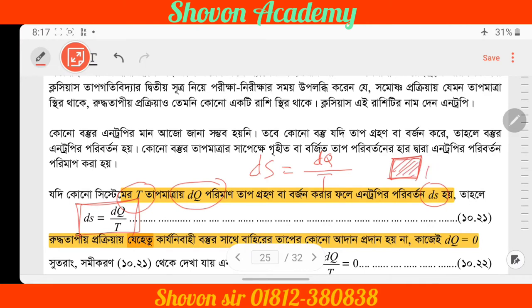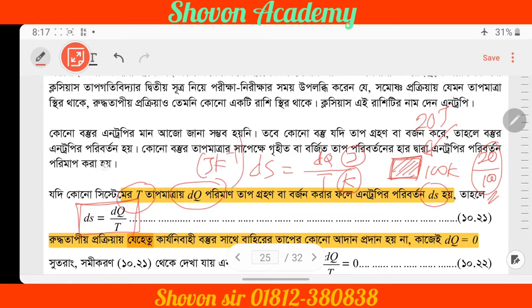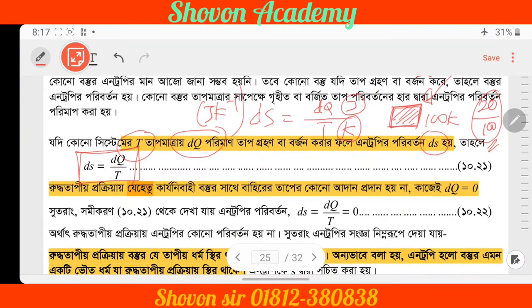The system absorbs heat and the unit of entropy is Joule per Kelvin. So, dS equals dq by T — this is the entropy change formula.